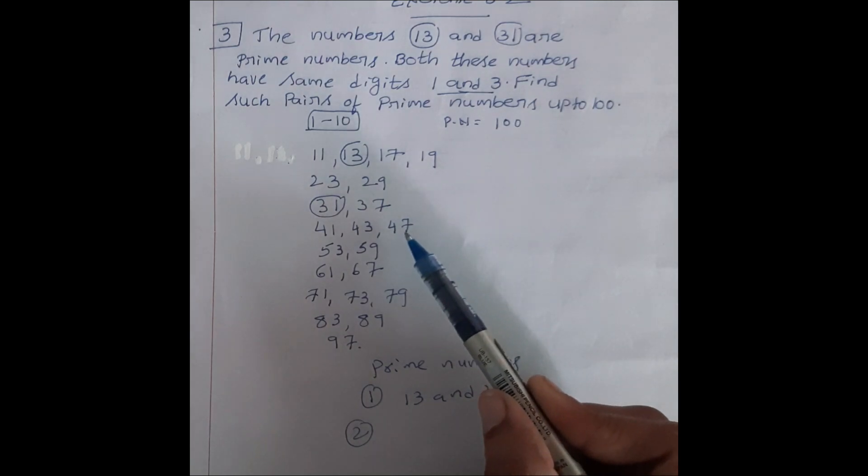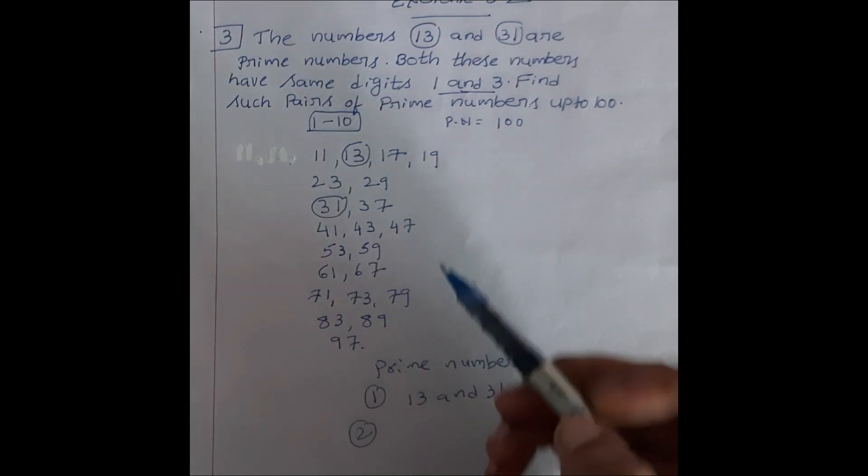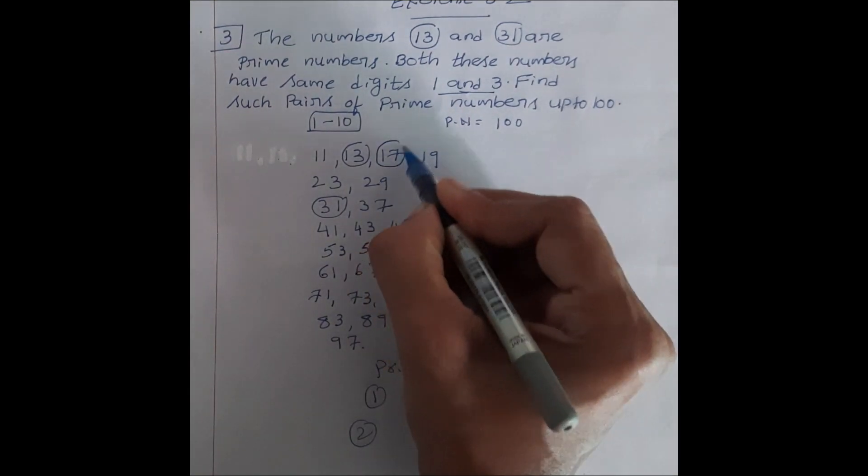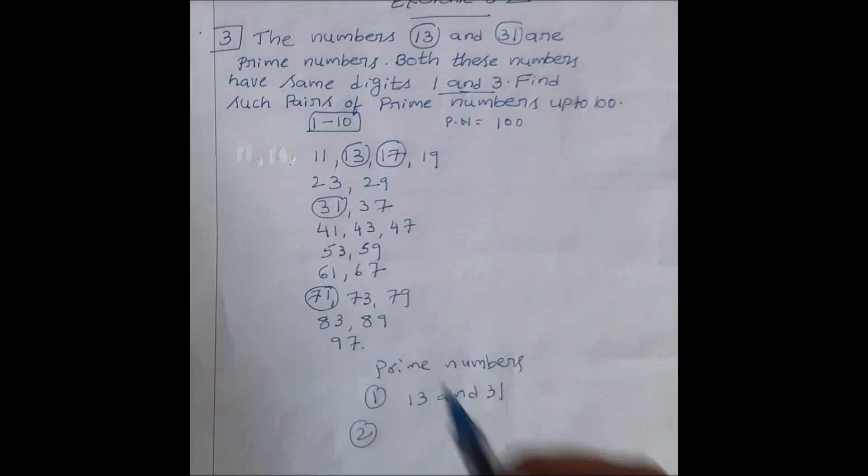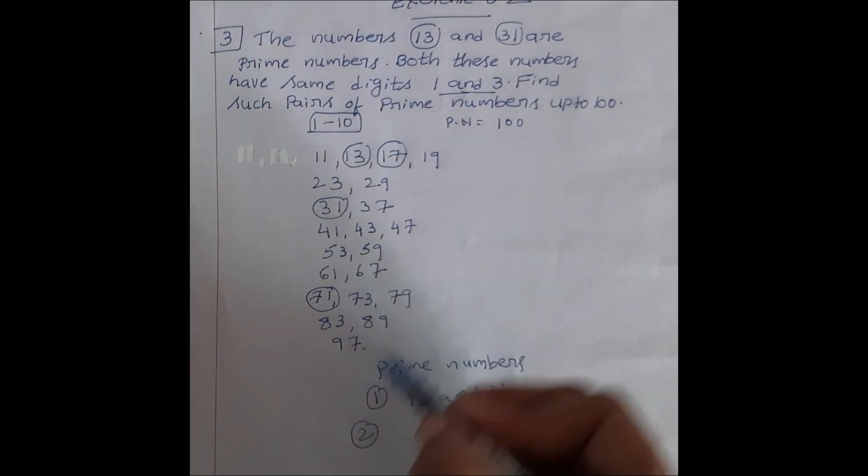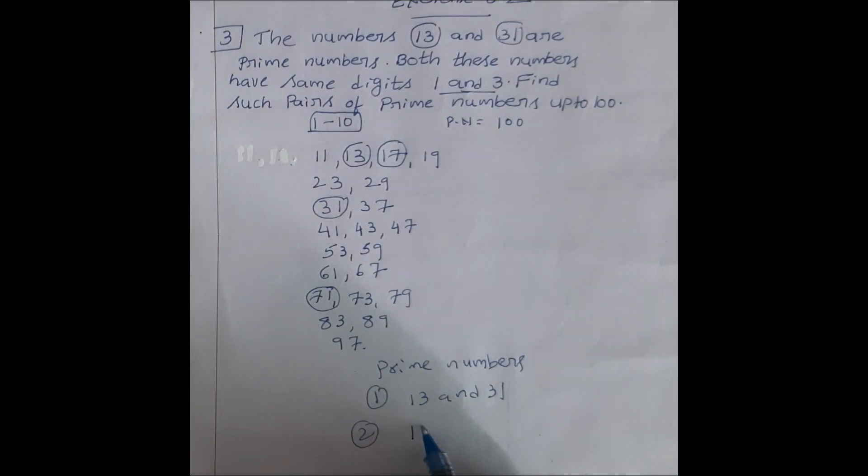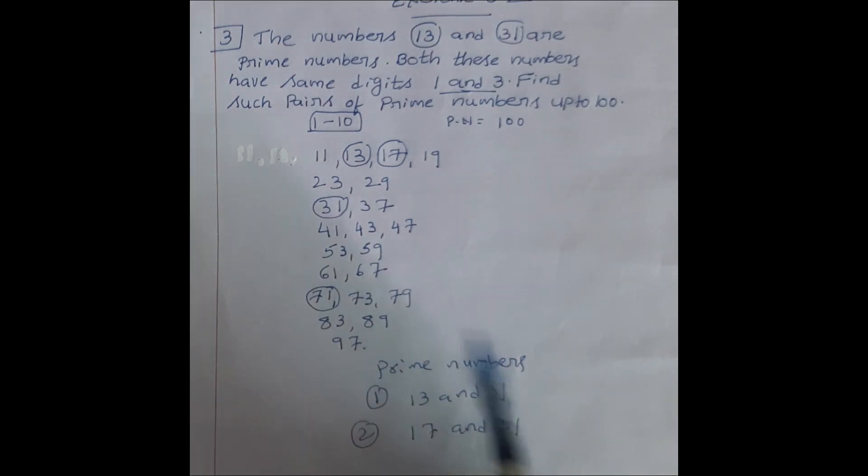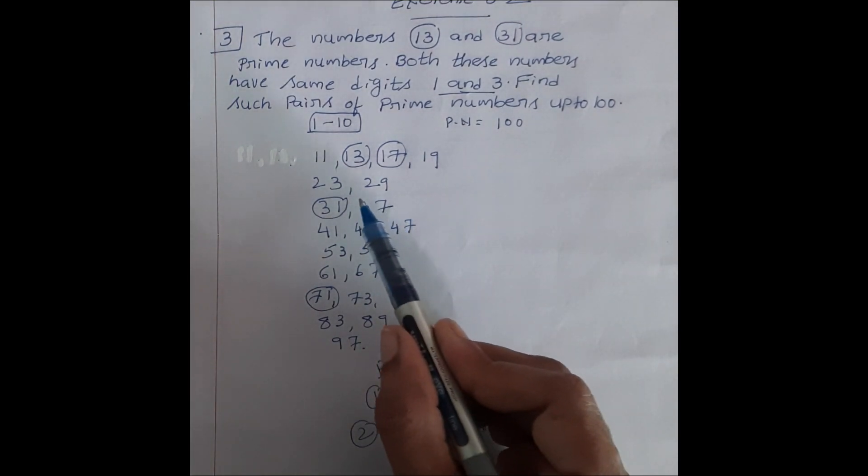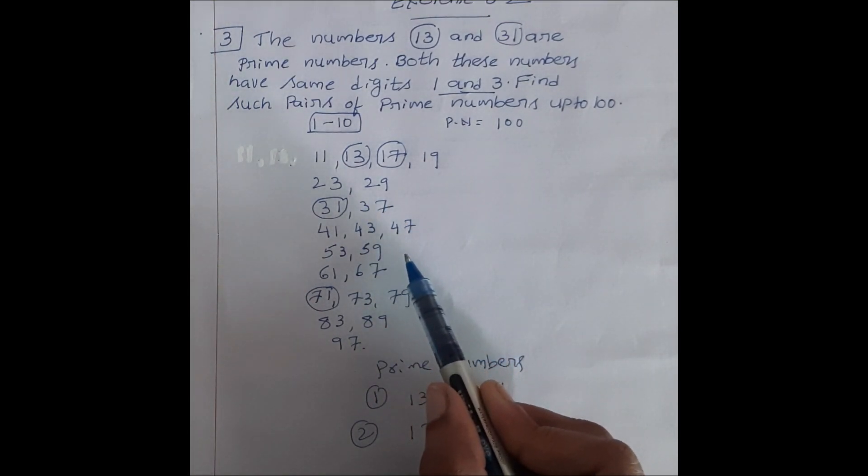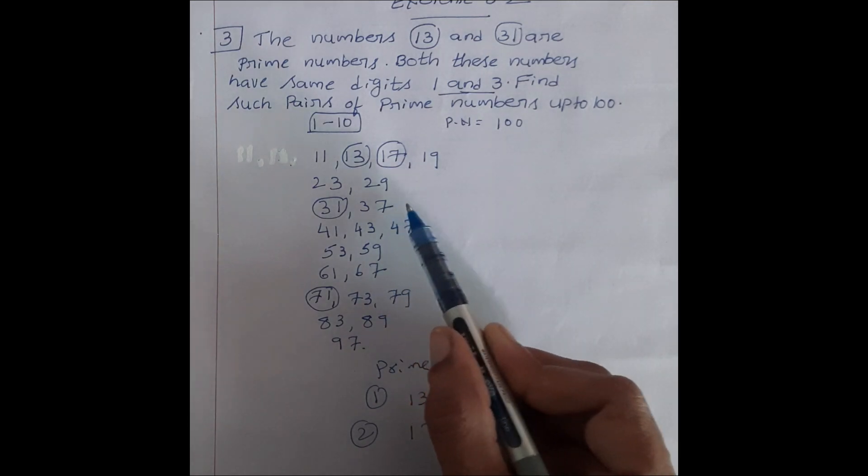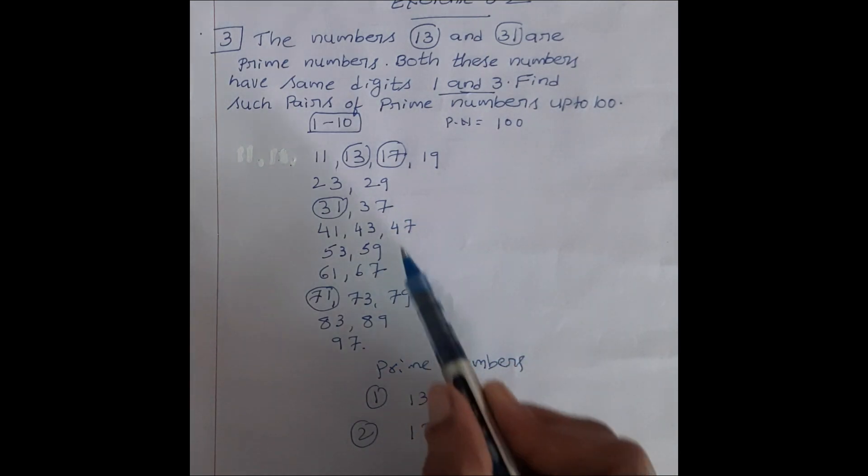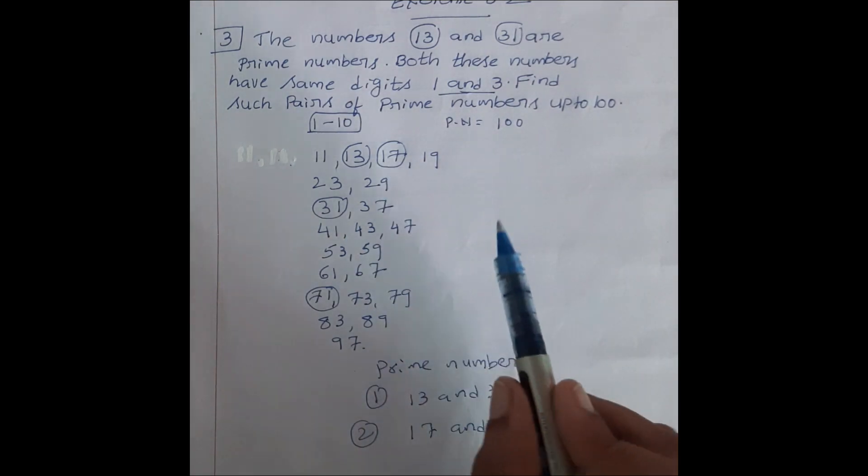17, either 1, 7 hai, either 7, 1 hai. Same number hai, position nahi laghe. So, yeh ek pair ho gaya. Aisa sabhi number saamne achchhe tarah se dekhna padega. 19, 19 to idhar nahi hai, next 23 nahi hai, 29 nahi hai, 31, 13 ka pair ho gaya.